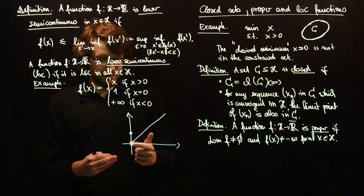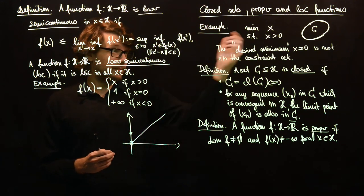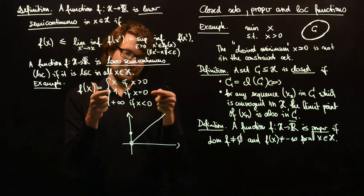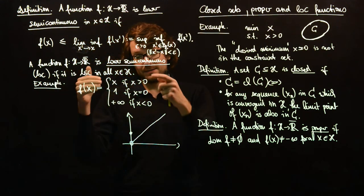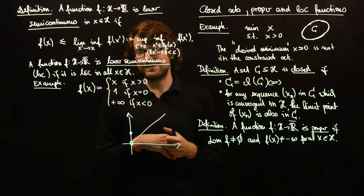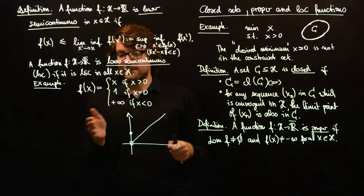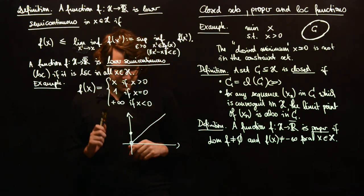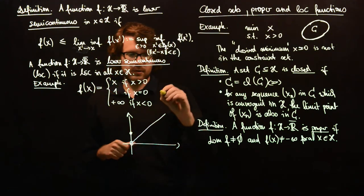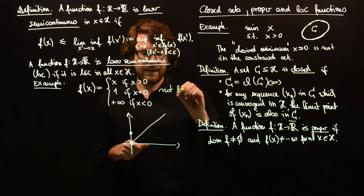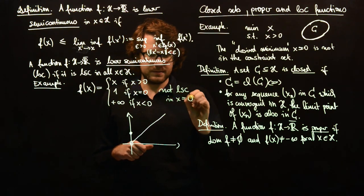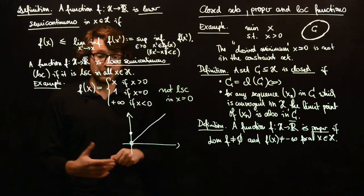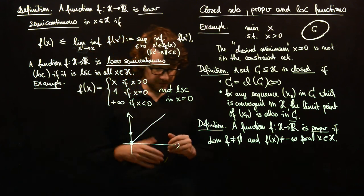Here we have the same thing. The desired minimum would be x equal to 0, as we had in our example for closeness. But the problem is here we have the value 1. We see that this function actually is convex. So convexity alone will not help to overcome this. So this is not lsc in 0.